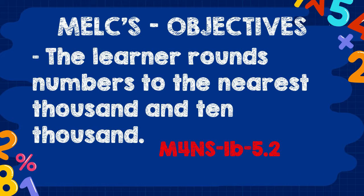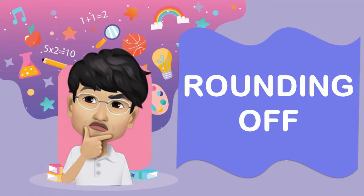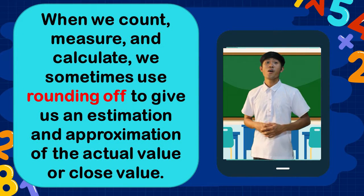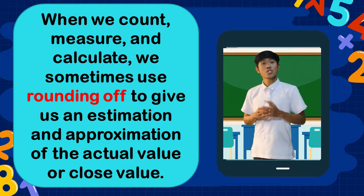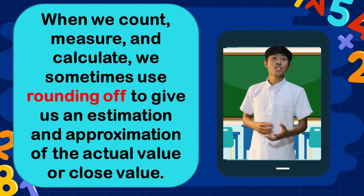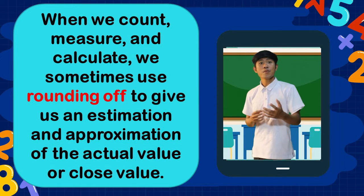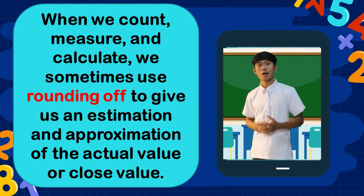Now, our next objective: the learner rounds numbers to the nearest thousand and ten thousand. We proceed to rounding off. When we count, measure, and calculate, we sometimes use rounding off to give us an estimation and approximation of the actual value or a close value.